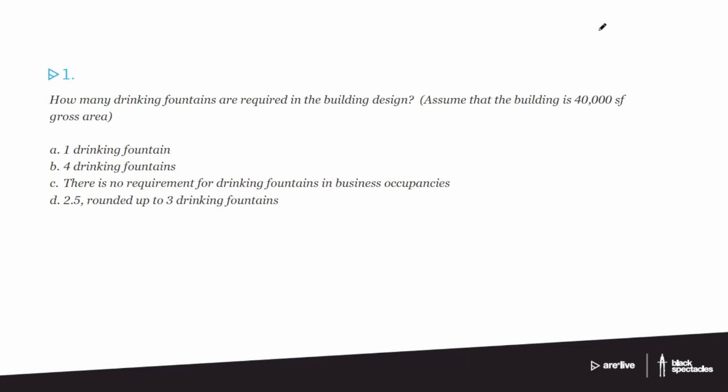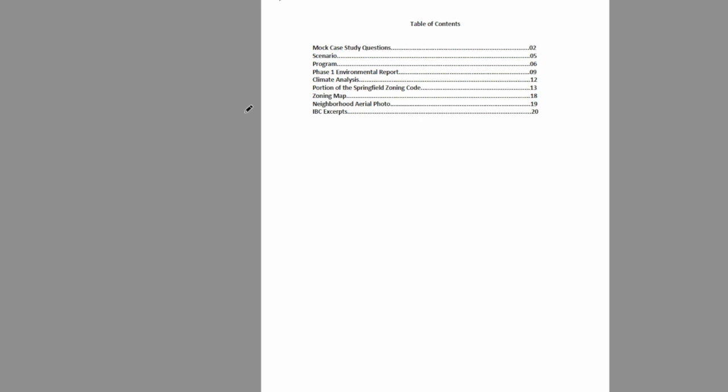Let's take a look at that and run through some of the information. Here's the table of contents — effectively our tabs, like tabs across the top of a computer screen. We've got the scenario, a program, a Phase 1 environmental report, a climate analysis, the zoning code, a zoning map, an aerial photo, and then excerpts from the IBC — the International Building Code.